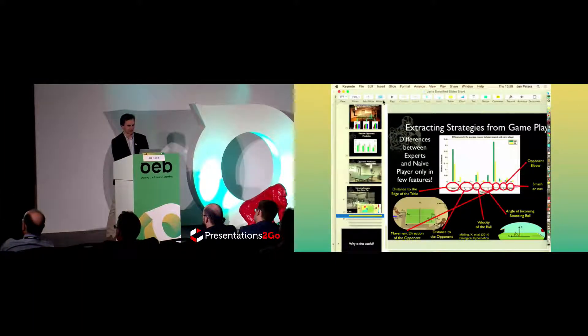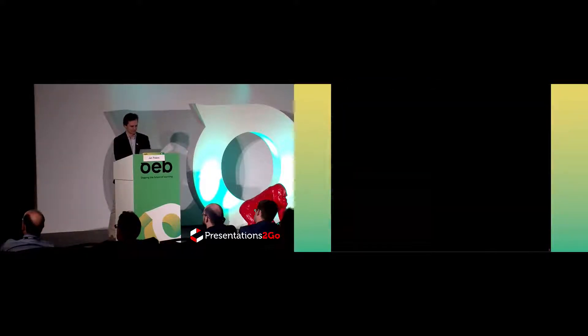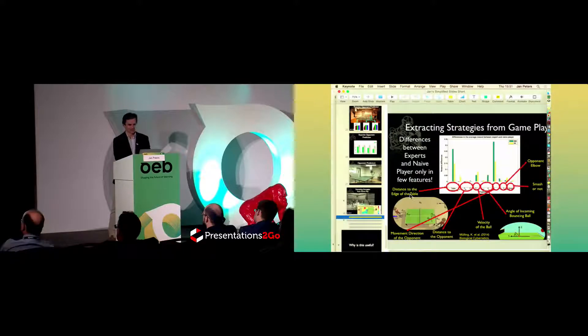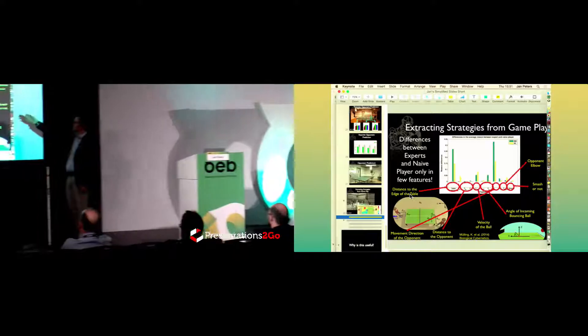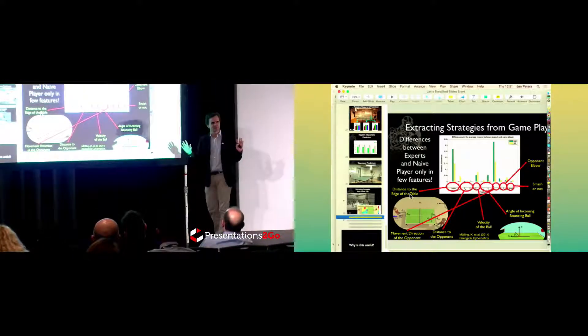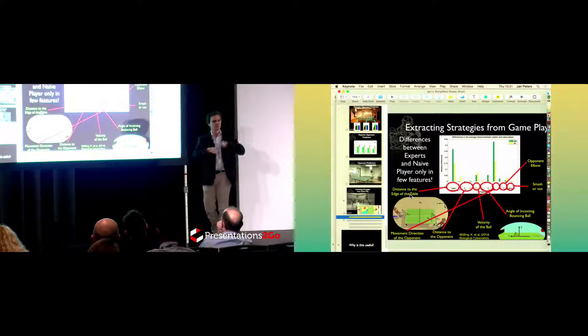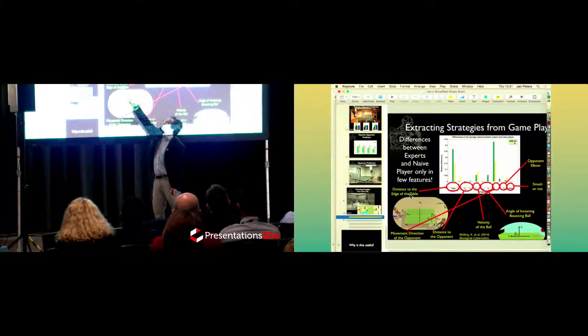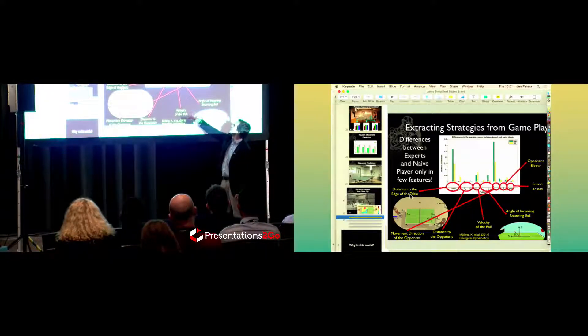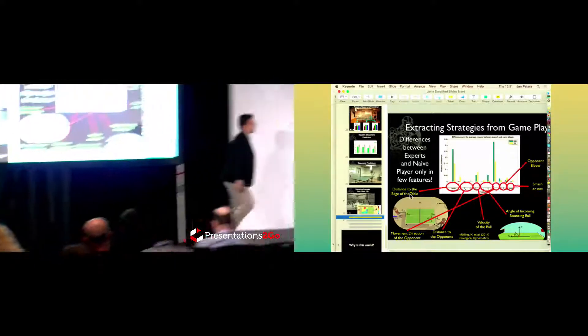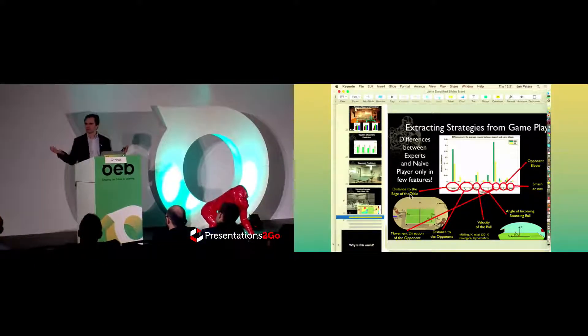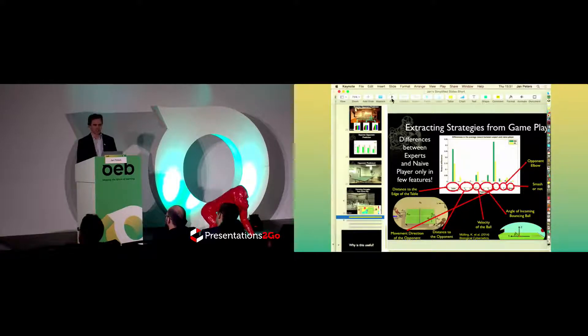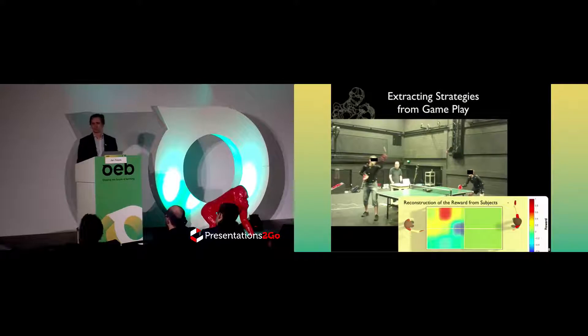The most amazing part maybe is that when we looked at the features which were used, we actually saw that the European champion level table tennis players had only very few differences in their reward function explaining their behavior. They were literally about only that they would go further away from the table, they would be able to deal with higher velocity balls, and they would incorporate the movement direction of the opponent. Which basically meant that our learning algorithm figured out that the strategy really depends on your quality of motor levels, and that experts know that they're very good, while pretty much all the other strategy components are the same between laymen and experts.